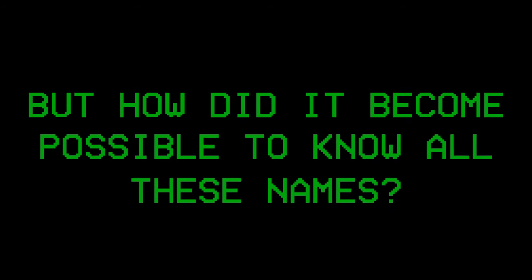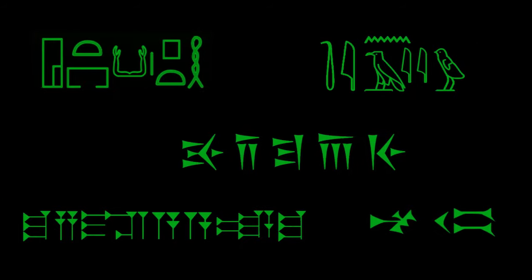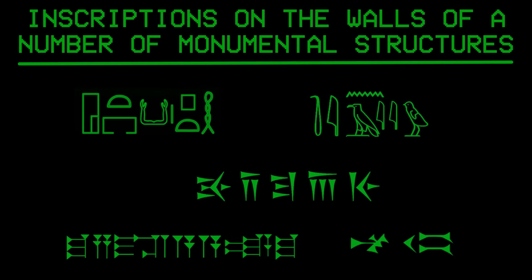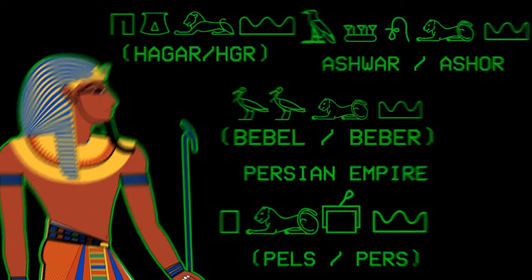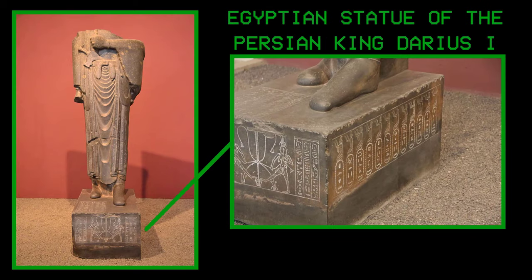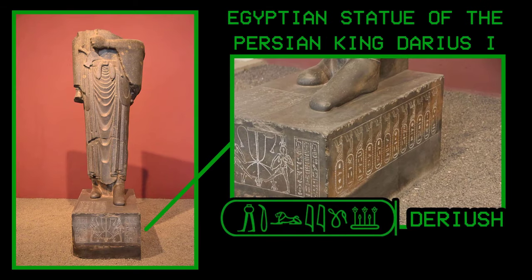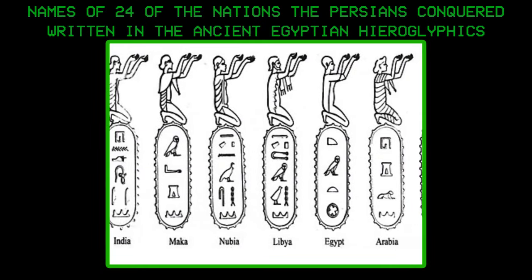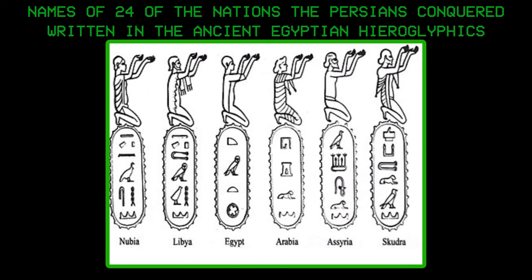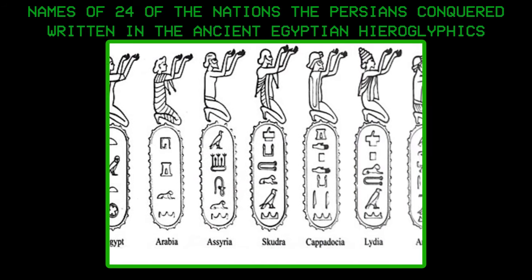But how did it become possible to know all these names about ancient civilizations? In fact, all of these names are recorded in the form of inscriptions on the walls of a number of temples, tombs, and monumental statues in some countries. For example, the names given by the ancient Egyptians to the ancient civilizations neighboring them are found in an inscription on both sides of the base of a statue made in Egypt for the Persian king Darius the Great, or as the ancient Egyptians called him, King Diraush. This inscription contains the names of 24 nations that the Persians were able to conquer and control, written in the ancient Egyptian language in hieroglyphics.